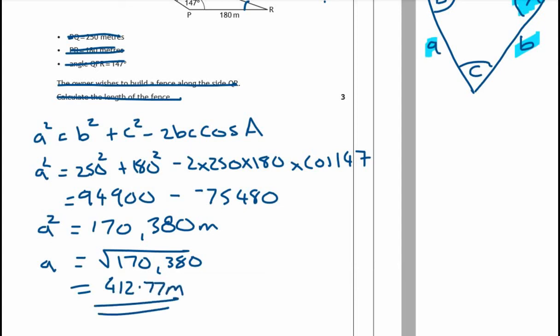So square root of 170,380. And that's going to give me 412.77 metres. I'm just going to check the question. It does nothing about rounding. So that should be okay. Right. Let's see where the marks are in the marking scheme. Red pen. So our first mark is for a correct substitution. Fantastic. Our second mark is for getting down to here. And our third mark is for doing the square root.